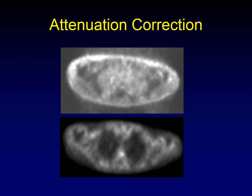Another very important concept to understand about positron annihilation is attenuation correction. If these high-energy photons are produced in a place surrounded by air with not much to absorb them, they will be overemphasized in the resulting image. For example, if produced in the skin right next to the surrounding air, the signal will be artificially inflated. Similarly, if produced in the lungs where it's predominantly surrounded by air, the signal will be artificially inflated. We need to correct for the attenuation of these high-energy photons by dense materials like bone, and then you get a more familiar PET-CT picture.